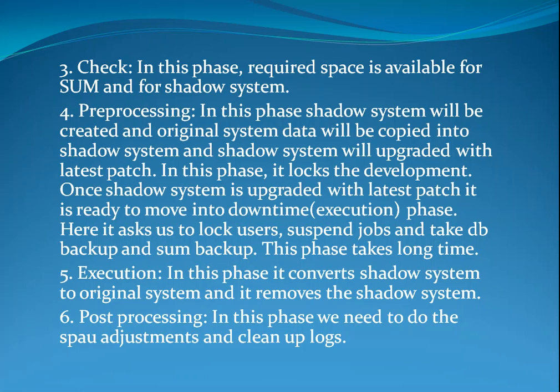The fourth phase is preprocessing. In this phase, the shadow system will be created and original system data will be copied into the shadow system. The shadow system will be upgraded with the latest patch. In this phase, it locks the development. Once the shadow system is upgraded with the latest patch, it is ready to move into the downtime phase. Here, it asks us to lock users, suspend jobs, and take a DB backup and Sum backup. This phase takes a long time.